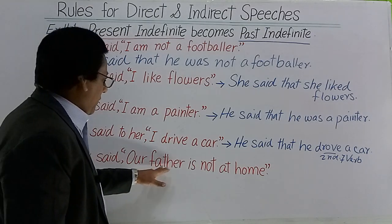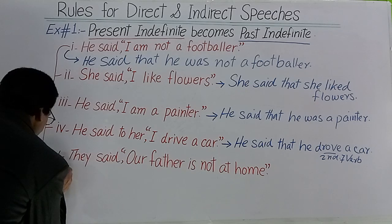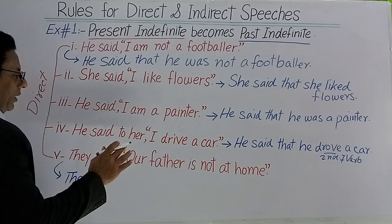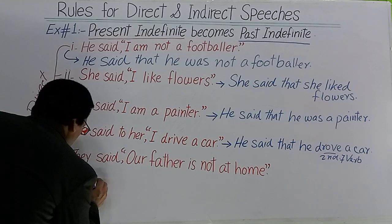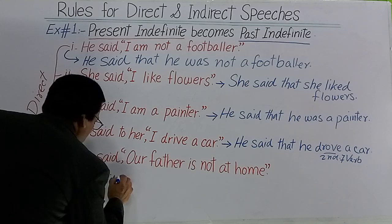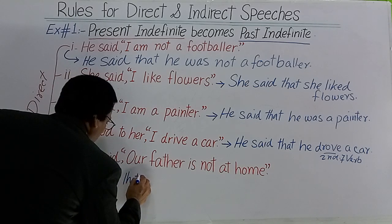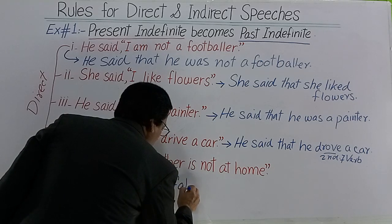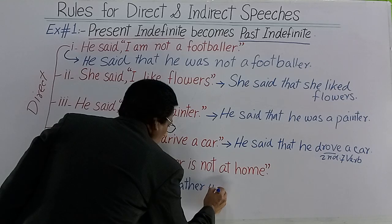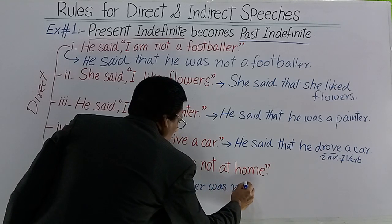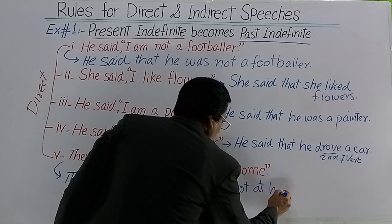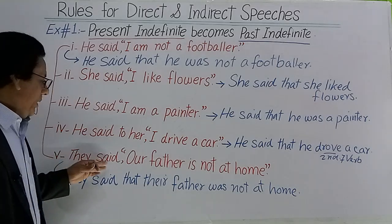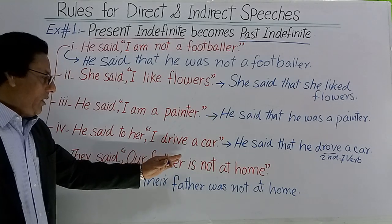پانچواں جملہ: They said, 'Our father is not at home.' انہوں نے کہا کہ ہمارے والد صاحب گھر پر نہیں ہیں۔ Indirect میں: They said that their father was not at home. 'Our' بدل کر 'their' ہو گیا اور 'is not' بدل کر 'was not' ہو گیا۔